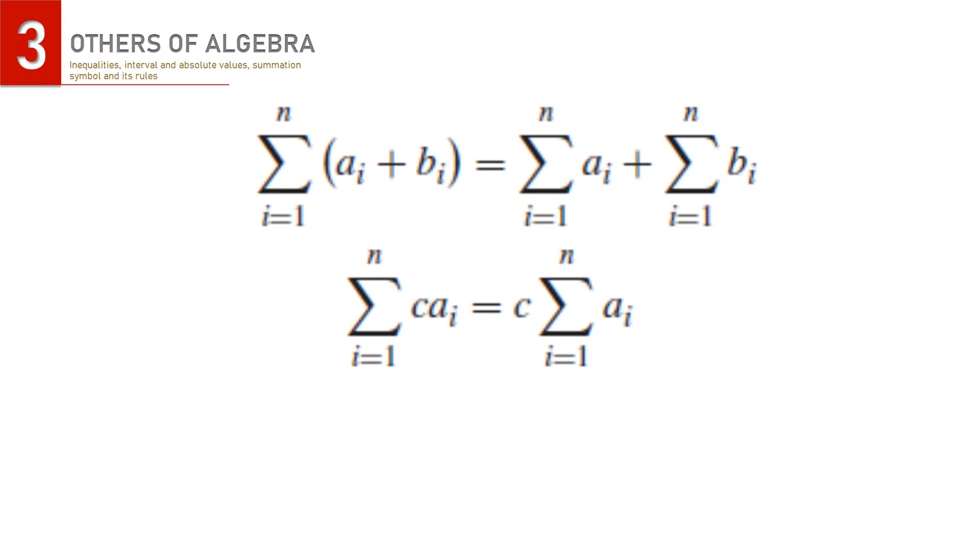The following properties of the summation notation are helpful when manipulating sums. These properties are known respectively as additivity and homogeneity. With additivity property, summation of the two variables a and b whose quantities are the same from 1 to n can be conducted using one summation sign or using separated summation sign.